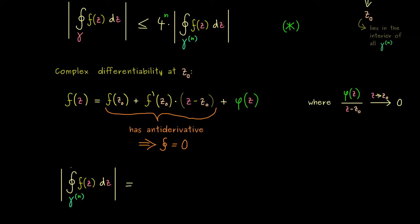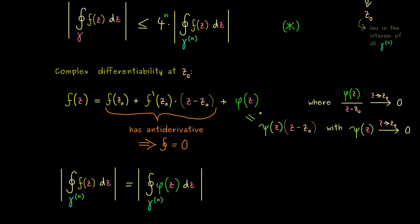Putting this into a formula: the absolute value of the closed curve integral of f along gamma^n equals the absolute value of the closed curve integral of phi. We already know a lot about phi — it goes to 0, and even so fast that phi(z)/(z − z₀) → 0 as z → z₀. Therefore we can rewrite phi(z) = psi(z) · (z − z₀), where psi(z) → 0 as z → z₀. This is what we use to estimate the integral.